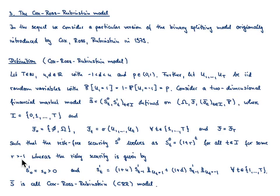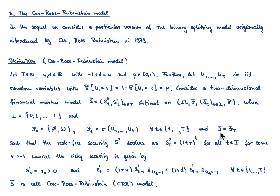In order to define the evolution of the risky security, let us first have a look at what kind of filtration we choose on our probability space (Ω, F, P). The initial sigma algebra F_0 is simply the trivial sigma algebra, consisting only of the empty set and the full set. The sigma algebra F_t is generated by the random variables U1 up to U_t for any t from 1 to capital T. Moreover, I set F equal to the sigma algebra F_T.